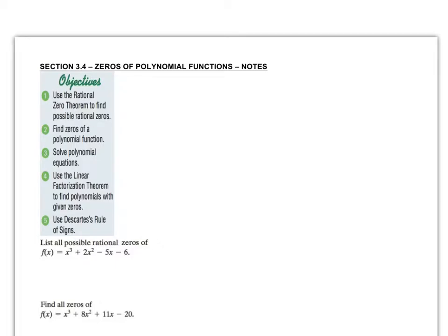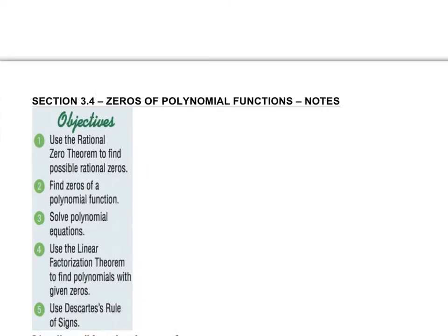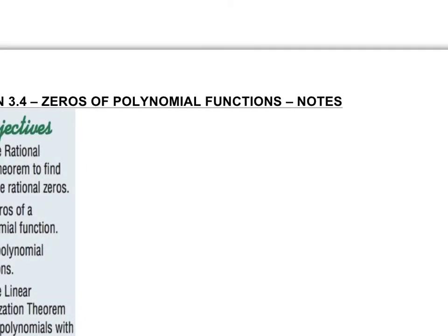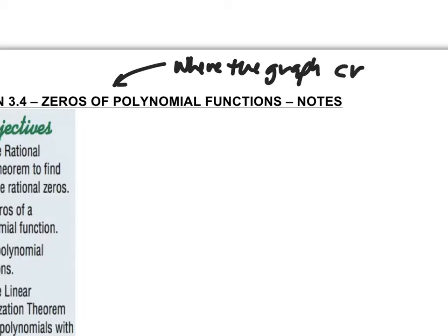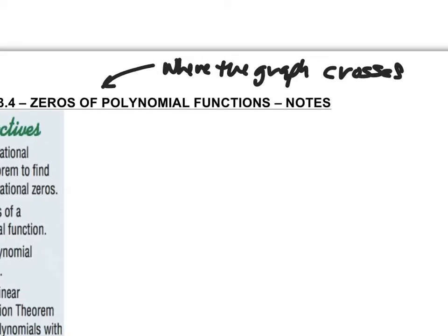Hello, welcome back to Math 121. This is section 3.4. We're going to be talking about zeros of a polynomial function. We talked about this in the last video. When we're finding zeros of a polynomial, we're finding where the graph crosses the x-axis.